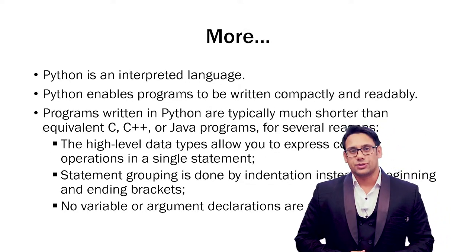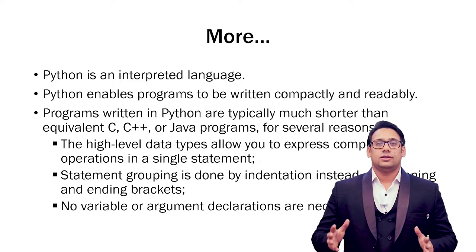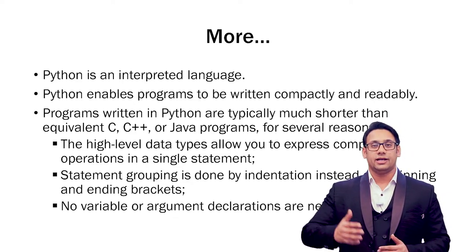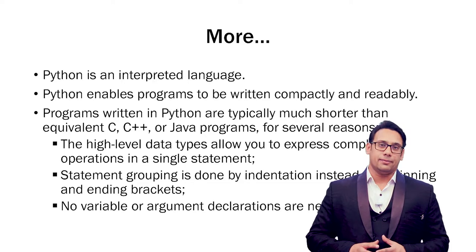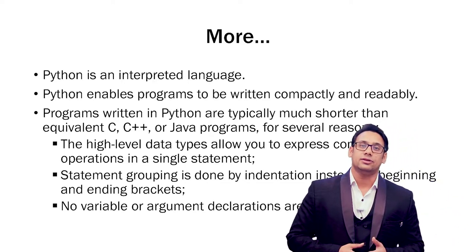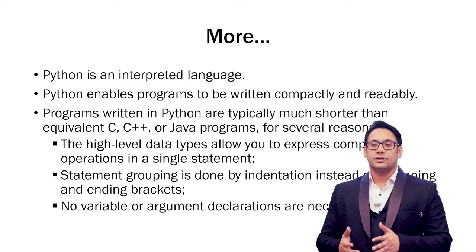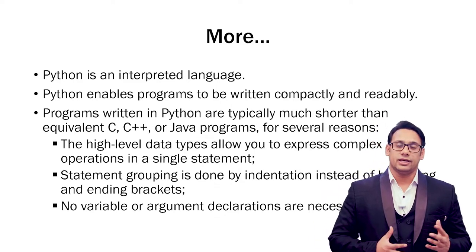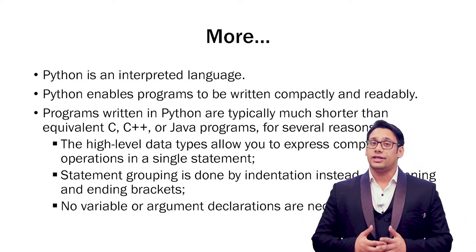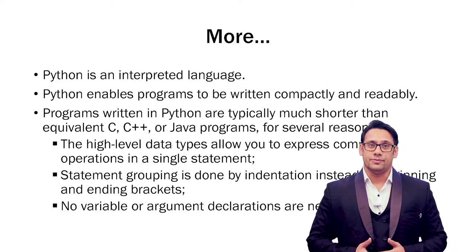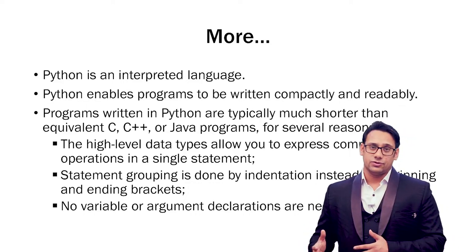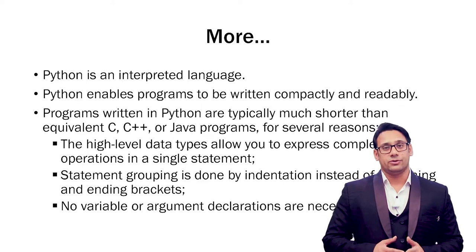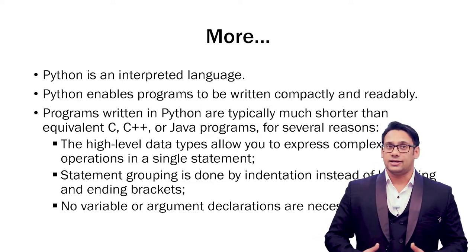Python is an interpreted language. What does interpreted language mean? In languages like C and C++, to run the program you have to compile it completely — the entire program and all the libraries are compiled before giving the output. But in Python, every single line, every single script can be executed independently, which makes it very easy. If you want to do testing in the program or create rapid programs, it is very easy when the programming language itself is interpreted. I will create a separate lecture for this which will help you understand the difference between an interpreted language and a compiled language like C and C++.